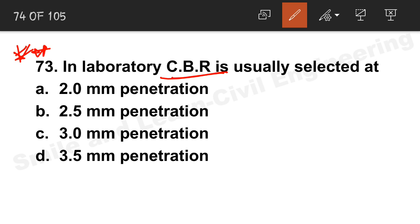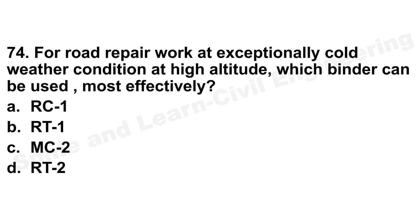Question 73: In laboratory CBR testing, the CBR value is usually selected based on two standard penetrations — 2.5 mm and 5 mm. Option B is the correct answer. If the value at 5 mm penetration comes out greater, the test must be repeated. Please revise all the details of the CBR test thoroughly.